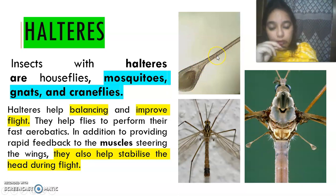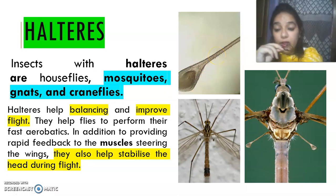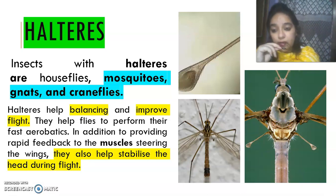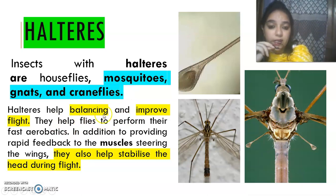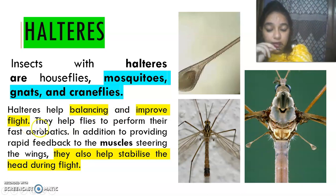This is a zoomed figure of a haltere, and this is a more magnified view of the haltere. We used to dissect this haltere and make a slide of it in our laboratories when we studied in MSc. The halteres are very important — they help in balancing and improvement of flight when an insect is in aerobatic flight conditions.